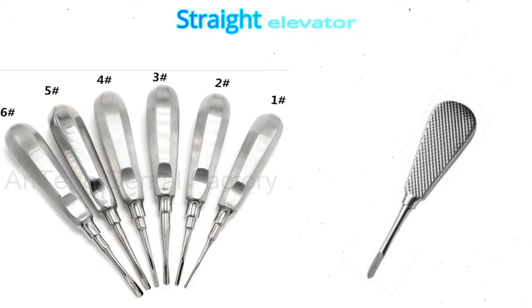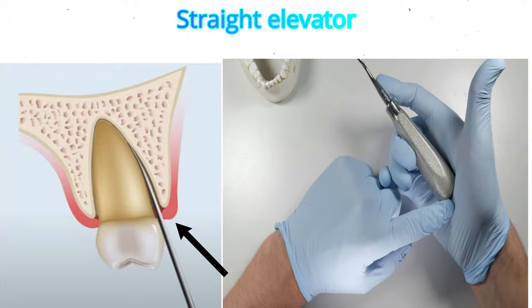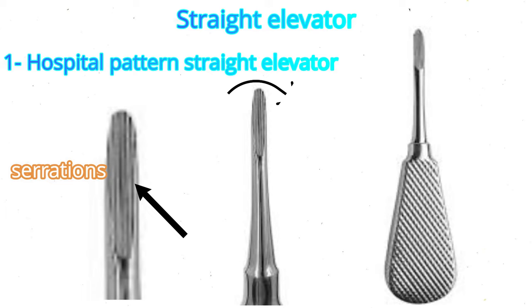Straight elevator. This is the most commonly used type of elevator for the removal of teeth and roots in both the upper and lower jaws. The elevator is held in the dominant hand, and the index finger is placed along the blade, almost reaching its end. The end of the blade is left exposed and is seated between the socket and the tooth to be luxated. The most commonly used type is the hospital pattern straight elevator, which has a rounded tip with vertical serrations on the inner surface of the blade and provides the best leverage due to the serrations.